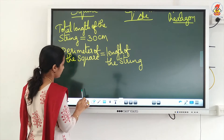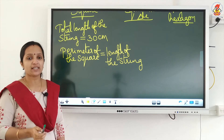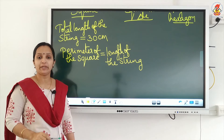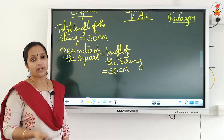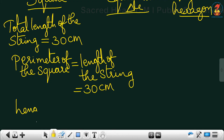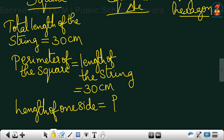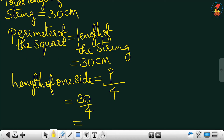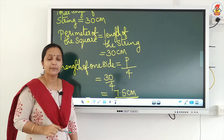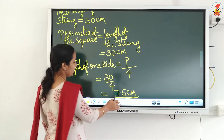By using the 30 centimeter string we are forming a square, so the perimeter of the square equals 30 centimeter. To find the length of one side, we use perimeter divided by 4, that means 30 divided by 4. Doing the long division gives us 7.5 centimeter. So the length of one side of the square is 7.5 centimeter.